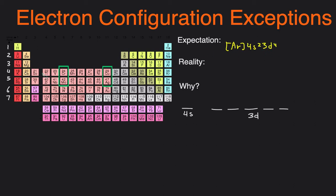You see there's 2 in the 4s and then 4 in the 3d. But in reality it's argon, 4s1, 3d5.